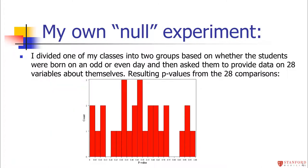I like to illustrate this in my on-campus class with a little experiment where I also know the null hypothesis is true — just like the Duke researchers did. I ask my class to fill out a survey at the beginning of the quarter, and one of the questions I ask is whether or not they were born on an odd day or an even day, because being born on an odd or even day really shouldn't affect anything in their future.